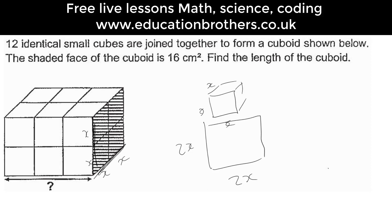They told me that the area of this shape is 16, so 2x times 2x equals 16. 4x squared equals 16. x squared equals 16 divided by 4. x squared equals 4. x is square root of 4.